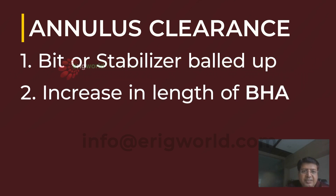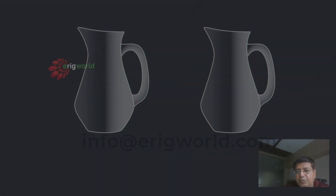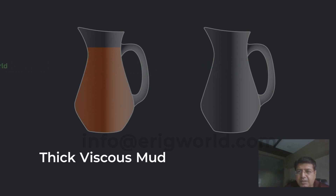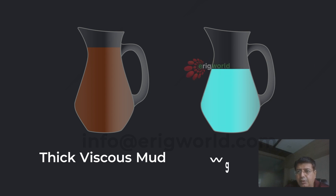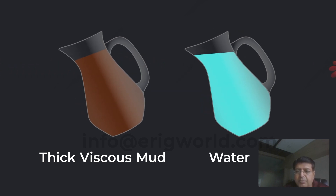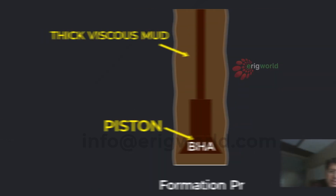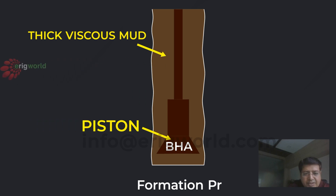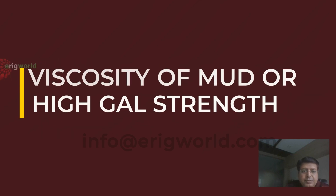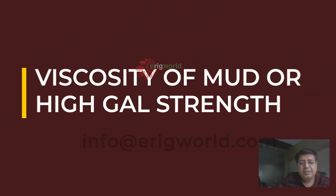The second factor that influences swabbing is mud viscosity or high gel strength. Consider two jugs: one full of thick viscous mud and one full of water. When tilted, water falls immediately, but thick viscous mud takes time to come down. If the fluid takes time to come down, the formation fluid is always ready to enter the wellbore. So high viscosity or high gel strength is the second factor leading to swabbing.